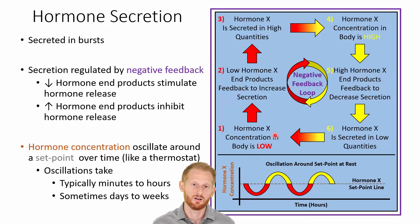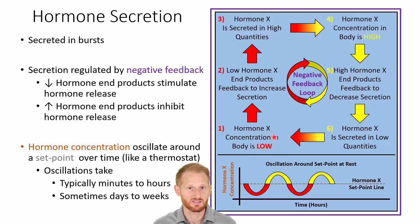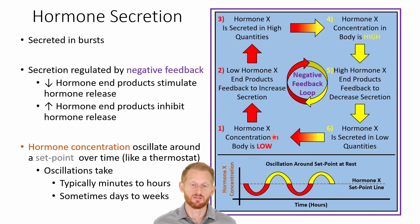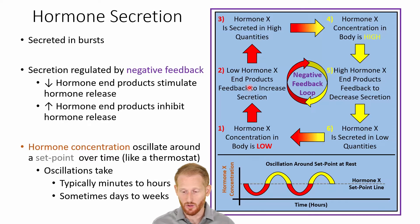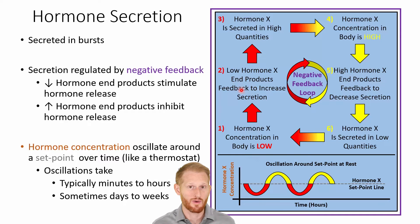Let's look at an example of a negative feedback loop. We have hormone X listed here generically — think of a hormone of your choice. I'm going to talk about glucagon. Glucagon's job is to raise blood sugar levels by releasing glucose and increasing how much sugar is in the blood. When glucagon is in low concentrations, that leads to a low amount of its end product — blood glucose. A low amount of glucose feeds back on the pancreas, which releases glucagon, to secrete more glucagon.